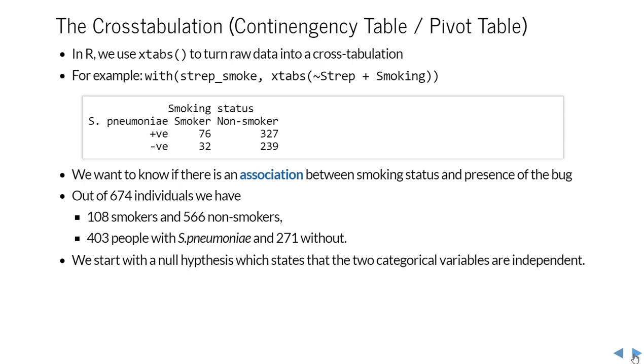You can create that cross-tabulation object and then apply a chi-squared test to it. What we want to know is whether there's an association between smoking status and the presence of this bug. Just note, for instance, out of 674 individuals, a total of 108 are smokers and 566 non-smokers, and 403 people with the bug and 271 without. We start with a null hypothesis that states that the two categorical variables are independent.